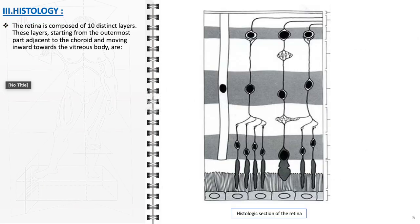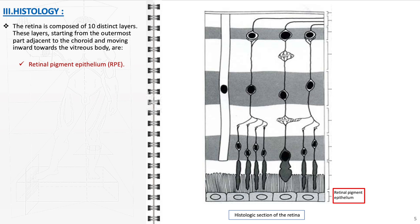The study of the retina's histology involves examining its complex, layered structure where each layer has a distinct function in visual perception. The retina consists of 10 distinct layers, each contributing uniquely to its overall function. These layers are arranged sequentially, starting from the outermost part adjacent to the choroid and extending inward towards the vitreous body: 1. The retinal pigment epithelium (RPE), a layer critical for nourishing the retinal cells.